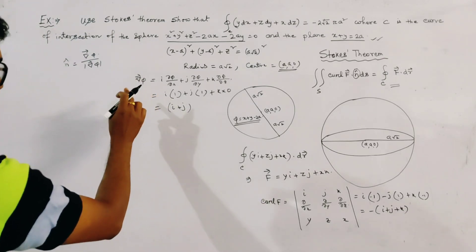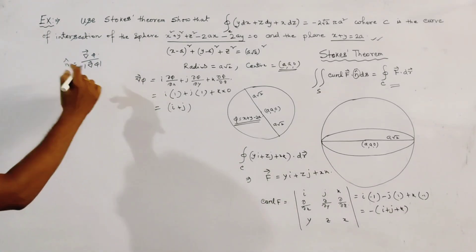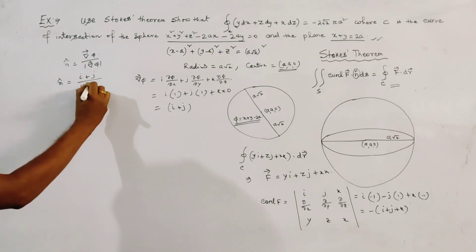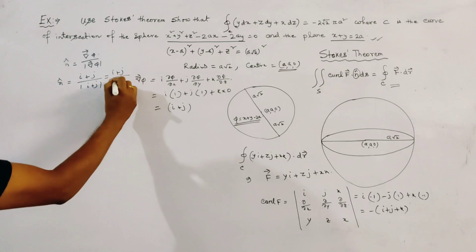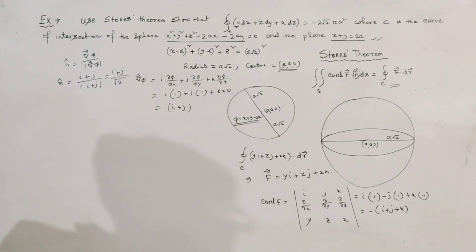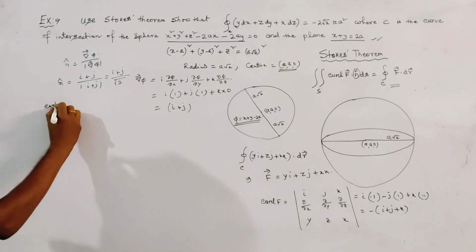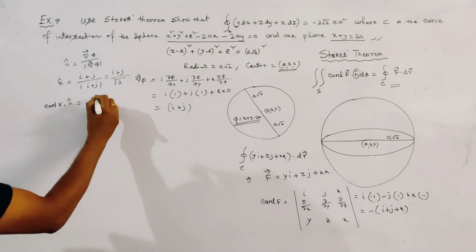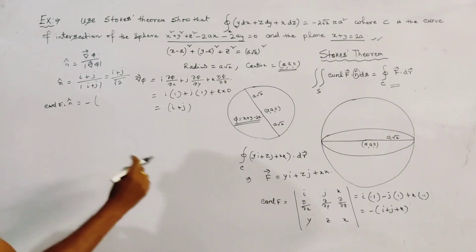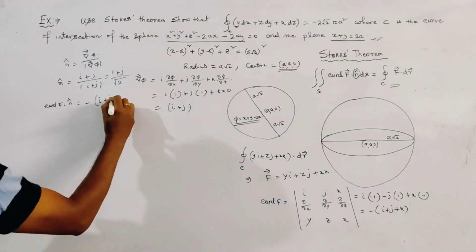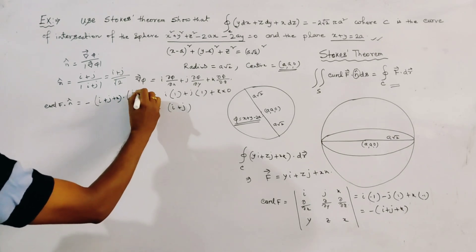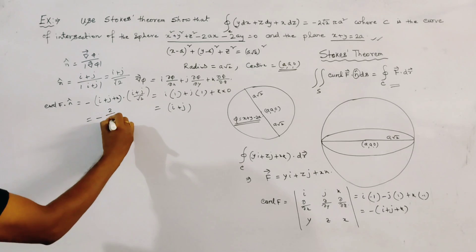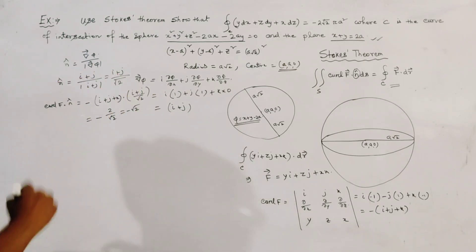Now, curl F dot n-hat equals minus (i plus j plus k) dot (i plus j) divided by root 2. This gives minus (1 plus 1) divided by root 2, which is minus 2 by root 2, equal to minus root 2.